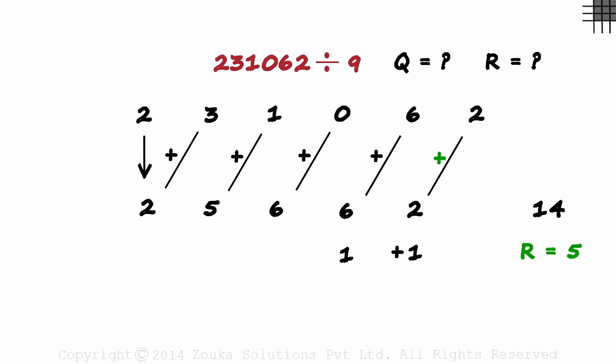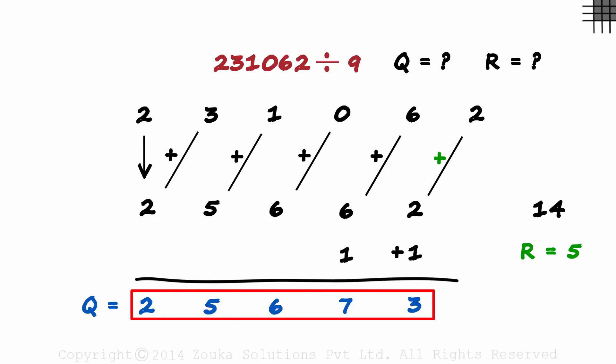Now we simply perform the addition. 2 plus 1 is 3, 6 plus 1 is 7, 6, 5, 2. That's our quotient: 25,673. And the remainder is 5.